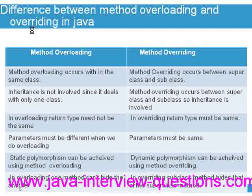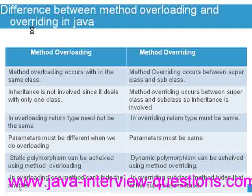Fourth point: parameters must be different when we do overloading, but parameters must be the same when we do method overriding. Next point: static polymorphism can be achieved using method overloading, and dynamic polymorphism can be achieved using method overriding. These are important distinctions.